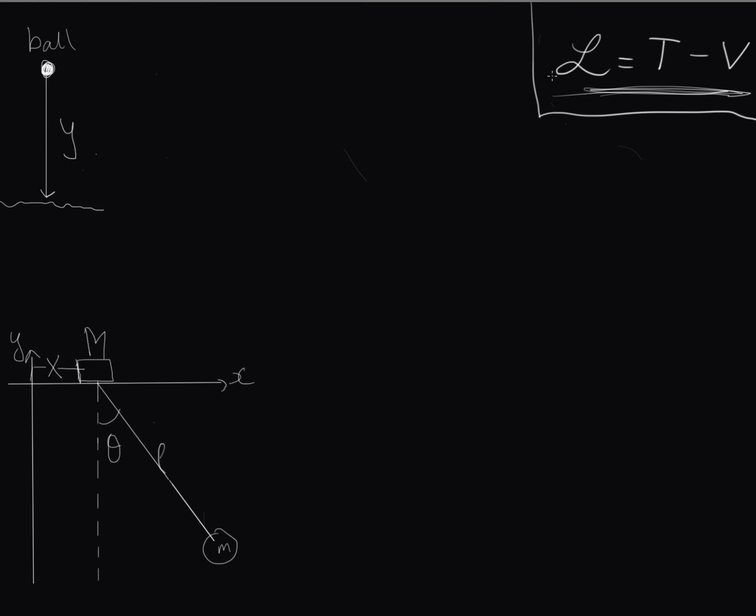So now let's have a look at finding the Lagrangian of a couple of systems. So I've got Lagrangian written up here. So we've got L is equal to T which is the kinetic energy minus V which is the potential energy. So now let's have a look at this first system. This is a pretty simple one. It's just an object falling from rest under the influence of a gravitational field.